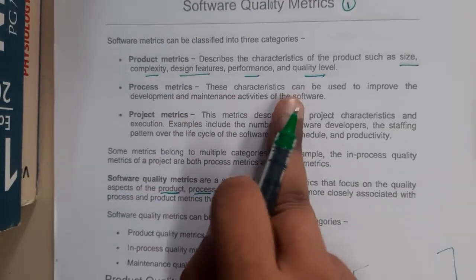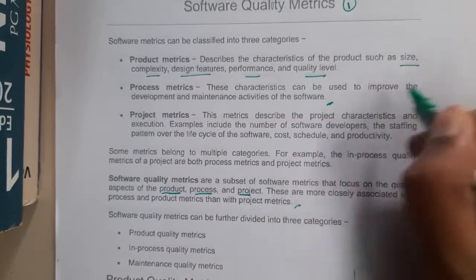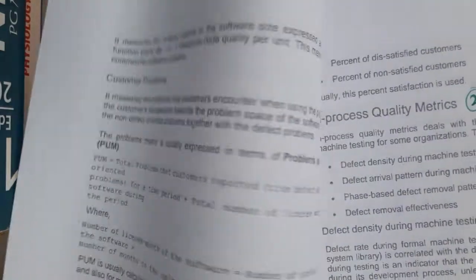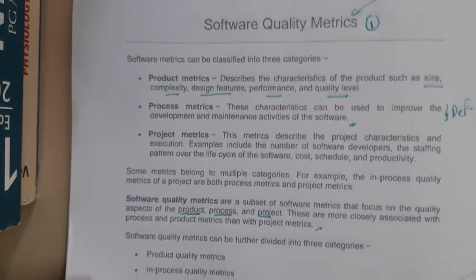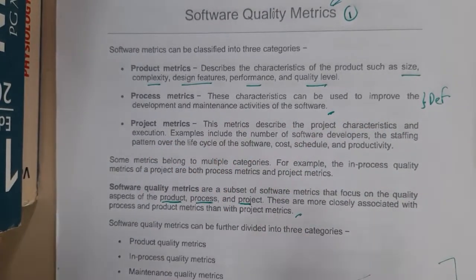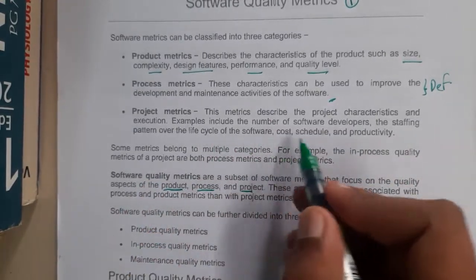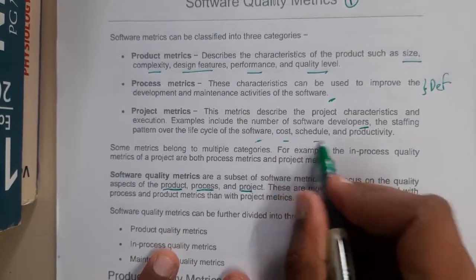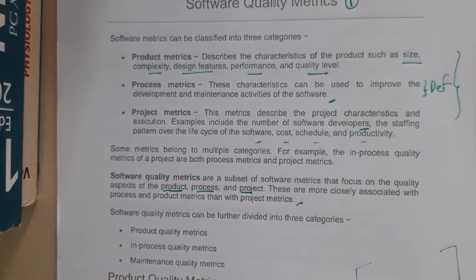Process matrix characteristics can be used to improve the development and maintenance activity of the software. In process matrix, defects are shown — we will discuss those defects, likely three or four types, in the next lecture. Project matrix describes project characteristics and execution: cost, time, life cycle, number of developers, staff pattern over the life cycle, hours worked, cost schedule, and productivity.